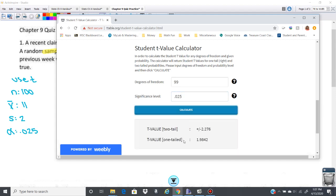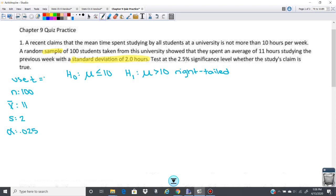So it's going to give me a t-value. It's going to be one-tailed here, 1.9842. So that is my t. So t is 1.9842.